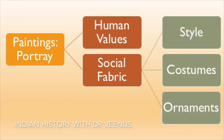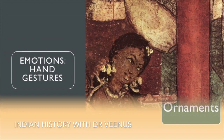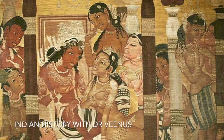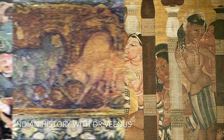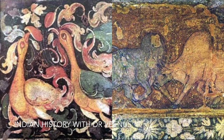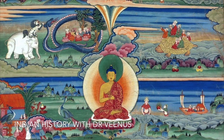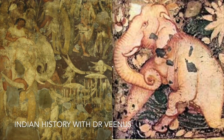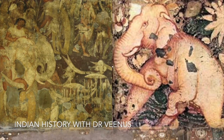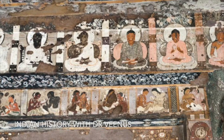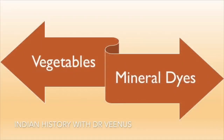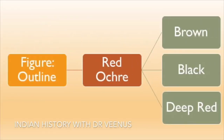The paintings portray human values and social fabric along with styles, costumes and ornaments of that period. Emotions are expressed through hand gestures. Each female figure has a unique hairstyle. Even animals and birds are shown with emotions. Common themes range from Jataka stories of the Buddha's life to elaborate decorative patterns of flora and fauna. Graceful poses of humans and animals adorn the cave walls. The medium was vegetable and mineral dyes, with outlines in red ochre and contours of brown, black or deep red.